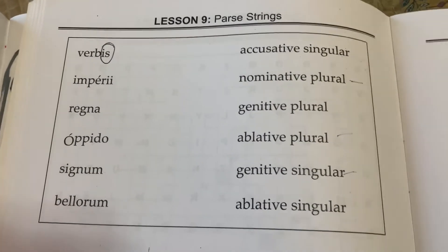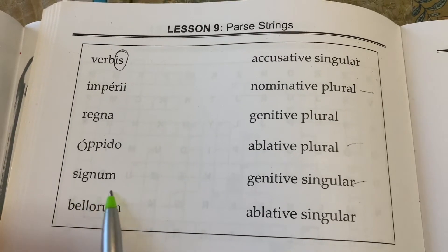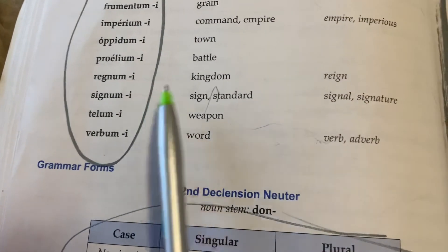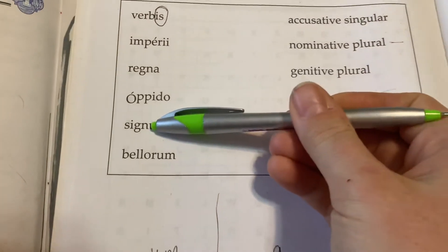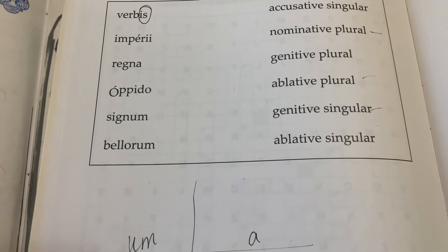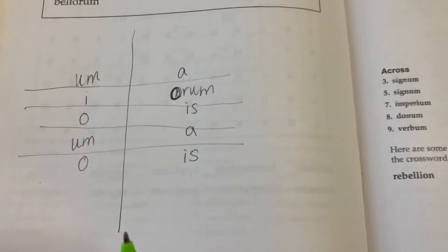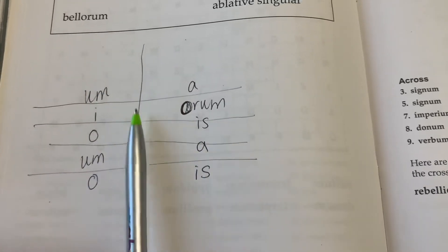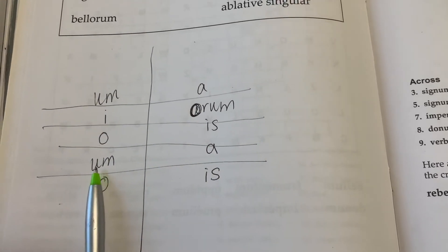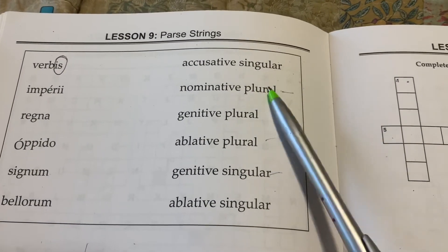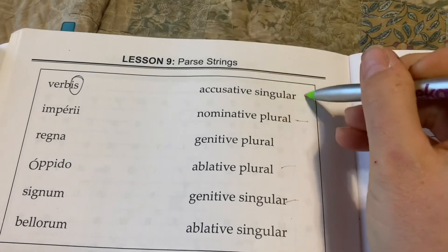Signum. That is actually how we learned it — signum, signi. The GN gives us that 'nyah' sound. That means 'sign' or 'standard,' and that's easy to remember because if you get rid of the first part of the word, it says 'sign.' Now signum has an accusative too, so it could be nominative singular or accusative singular. What do we have here? We have an accusative singular. So let's go ahead and check that one off.